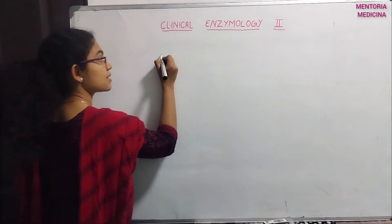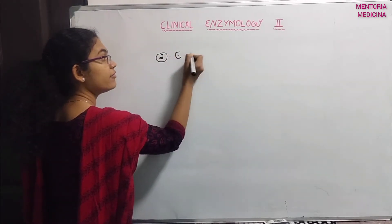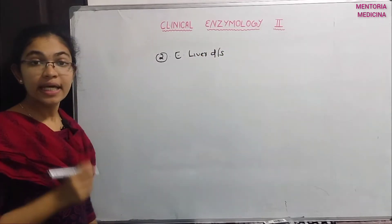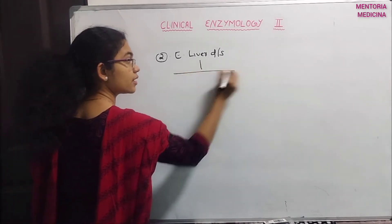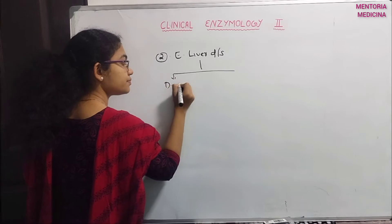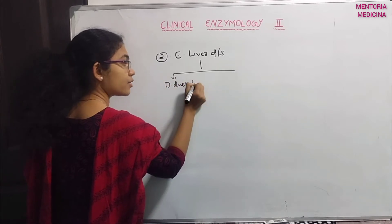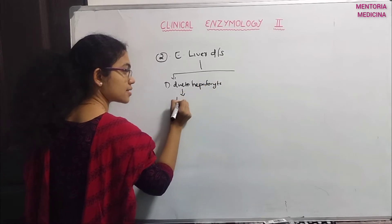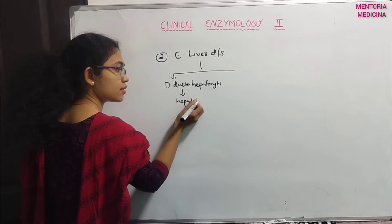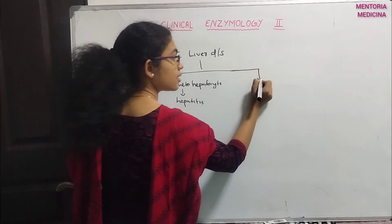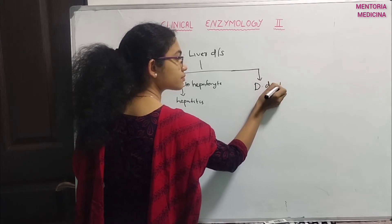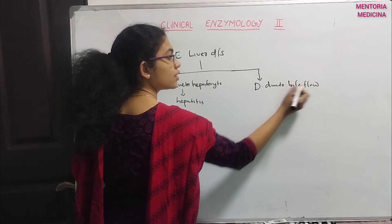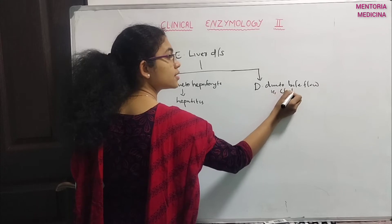Enzymes of liver disease — in liver disease, elevated enzymes are classified into two categories: damage due to hepatocytes, which leads to hepatitis, and damage due to bile flow, which is called cholestasis.